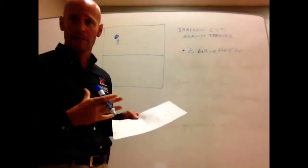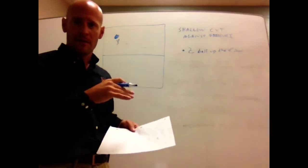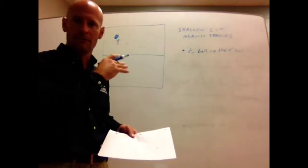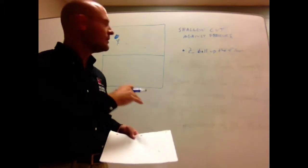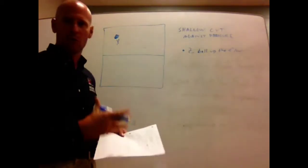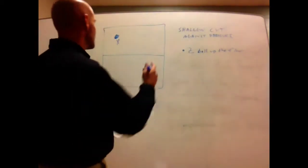So what we're going to talk about with the shallow cut is using that off-ball offensive player whose defender is left to go trap the ball, having them utilize the shallow cut to clear the floor, clear space and create passing lanes.